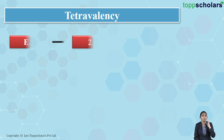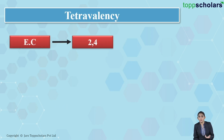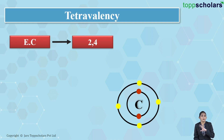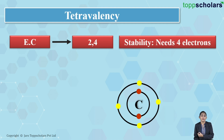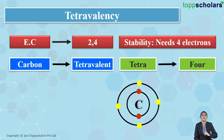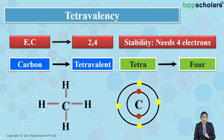The electronic configuration of carbon is 2,4, which means carbon has 4 electrons in its outermost shell. In order to complete its octet and attain the noble gas configuration, it needs 4 more electrons. Thereby, carbon is said to be tetravalent — tetra stands for 4 and valent stands for valency — meaning carbon can form 4 covalent bonds.